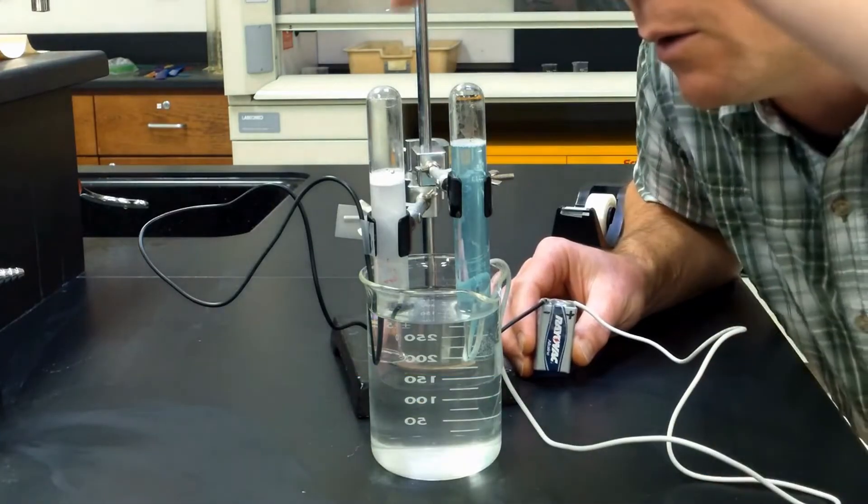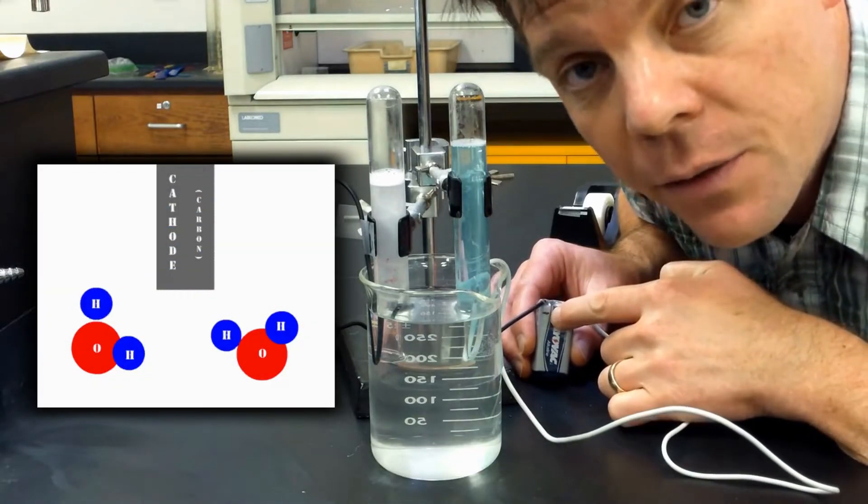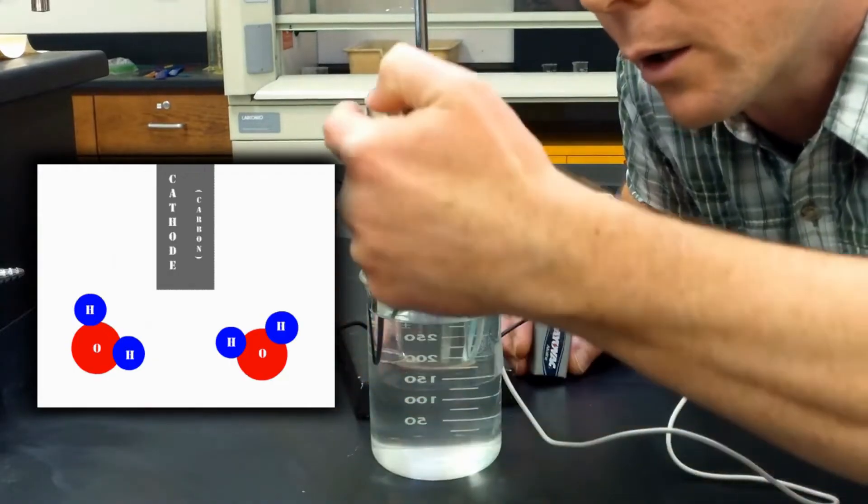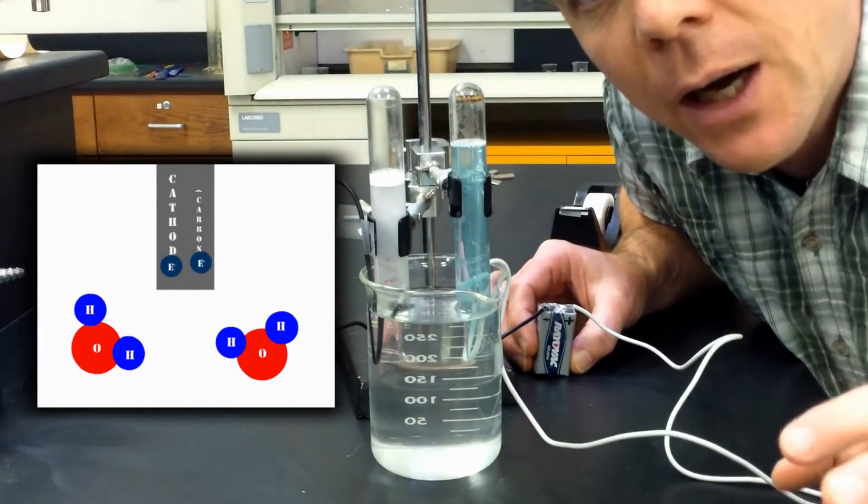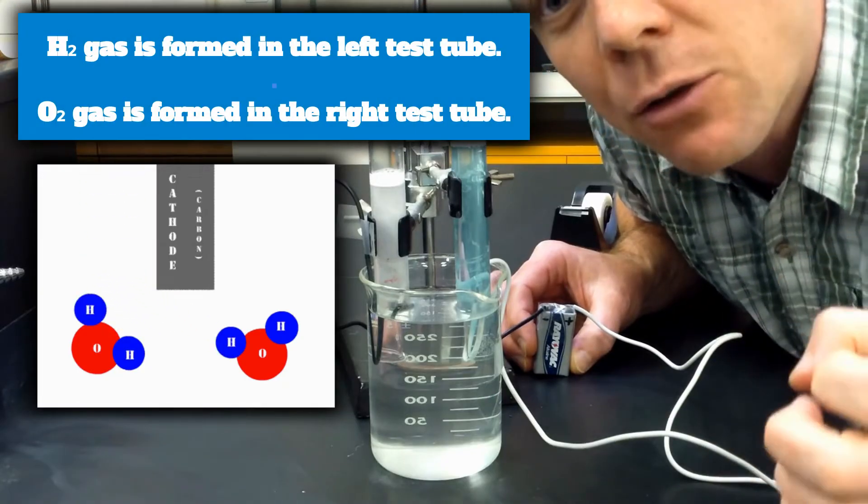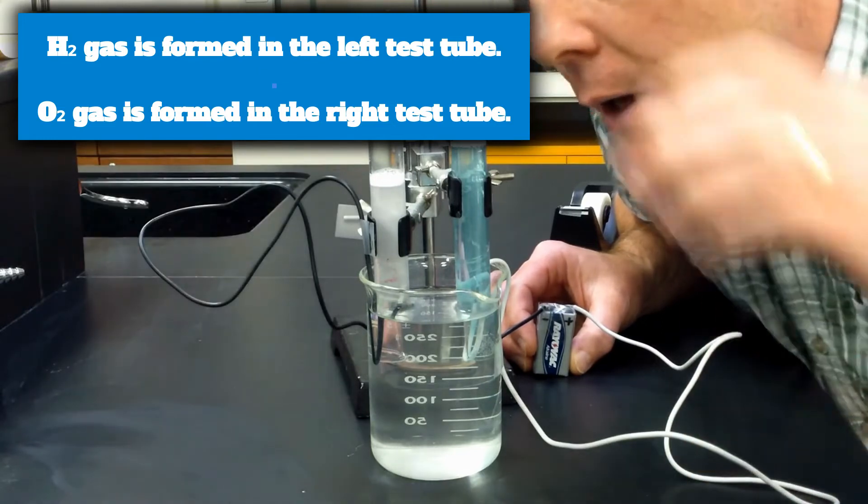The cathode, which is this terminal right here, has been hooked up to the negative side of the battery. So there are electrons that are flowing into the water at this terminal. Those electrons are causing water molecules to be reduced, and this actually forms hydrogen gas and hydroxide ions.